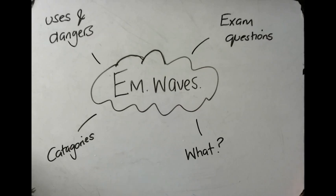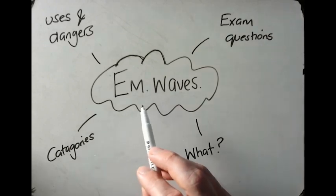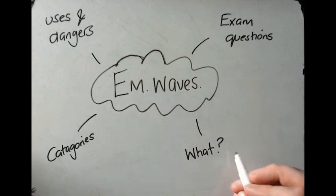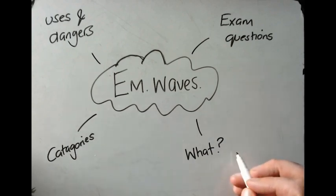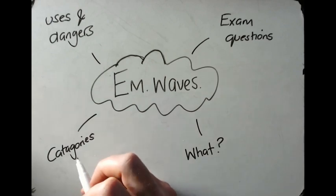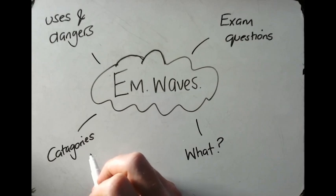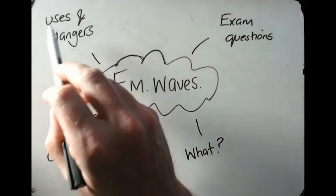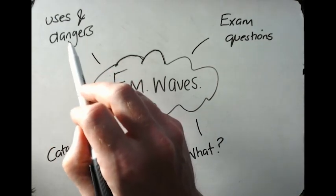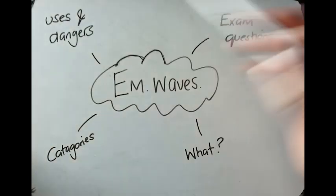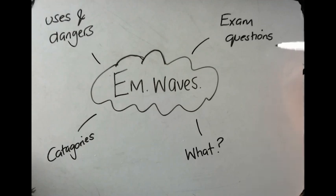Hello and welcome to this video in the wave series. In this one we are going to look at electromagnetic waves, or EM for short. We're going to look at what electromagnetic waves are, then the different categories — you can split electromagnetic waves into seven different categories — the uses of those different categories, as well as the dangers of those different categories of waves. Then we're going to look at breaking down an exam question and the typical things you are asked about electromagnetic waves.